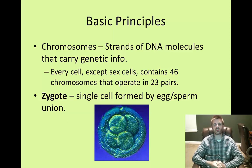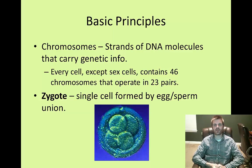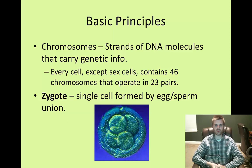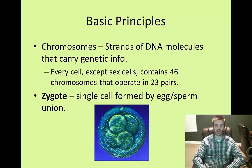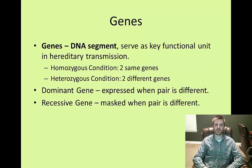A chromosome is a strand of DNA molecules that carry genetic information. Every cell, except for sex cells, contains 46 chromosomes that operate in 23 pairs. Also, a single cell that is formed by the union of a sperm and egg cell is referred to as a zygote, and when we get to the human development unit we will further study this.